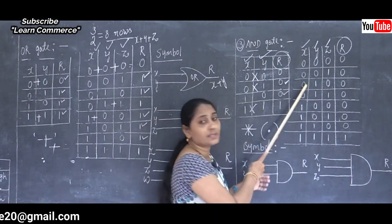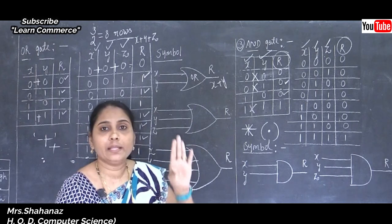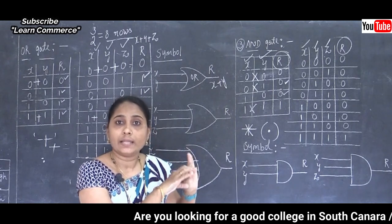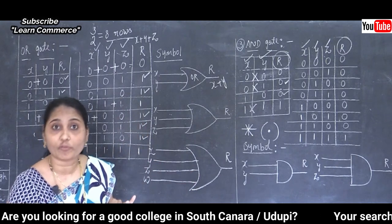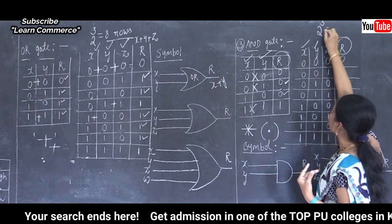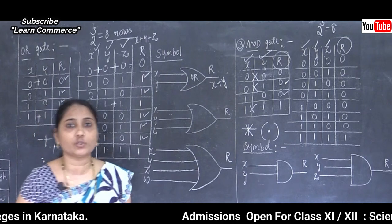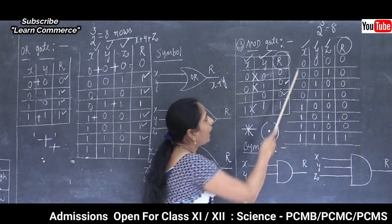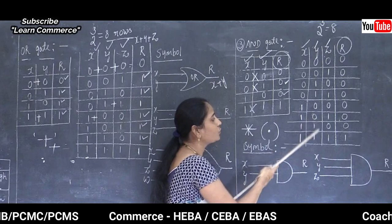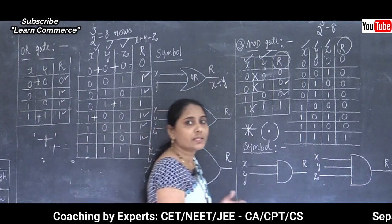For three-variable AND gate with X, Y, Z: two to the power of three equals eight rows. Column X: four 0s, four 1s; column Y: two 0s, two 1s, two 0s, two 1s; column Z: alternating 0 and 1 throughout.